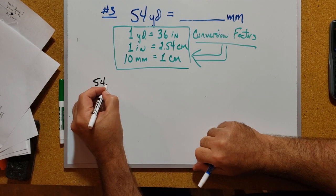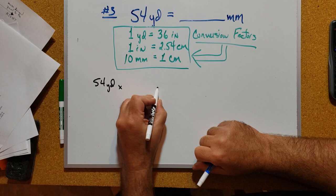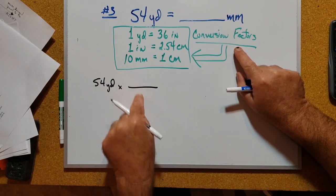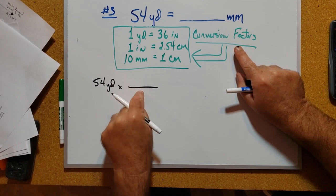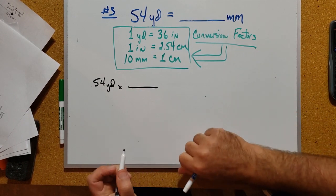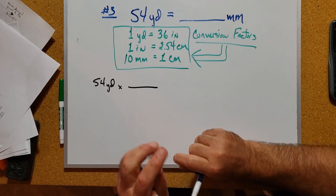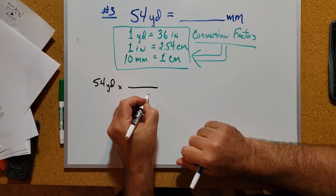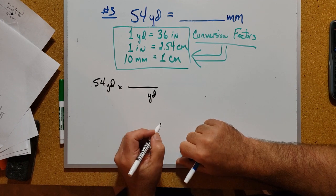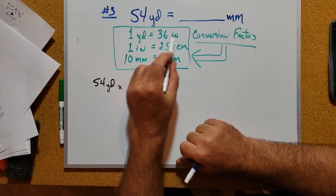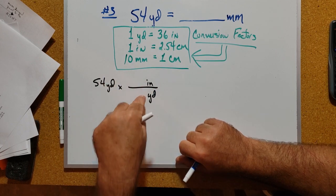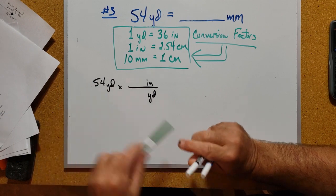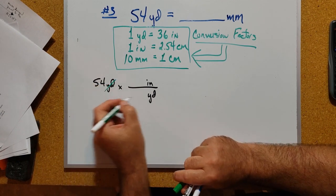So 54 yards times a conversion factor - one of these conversion factors is going to be set up as a ratio as the next component of our equation. Right now we are trying to cancel units at each step. If I have yards, I want to cancel yards. My strategy was to go from yards to inches, so I know that this conversion factor has to have yards and inches. If I set it up that way, then at this stage I could cancel yards out.